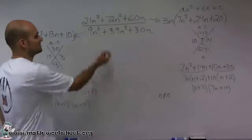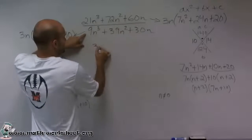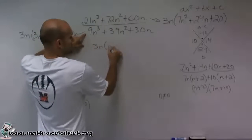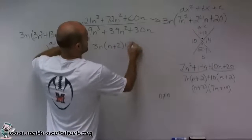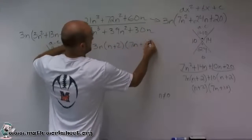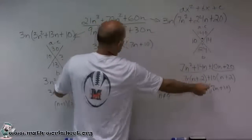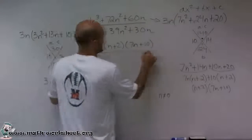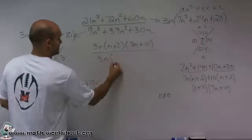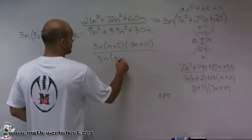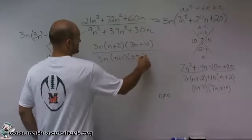OK, so let's put these all back together. So my numerator, if you remember, was 3n times n plus 2 times 7n plus 10. It was 3n times this, and then I simplified that down there. Then in my denominator, I have 3n times n plus 1 times 3n plus 10.